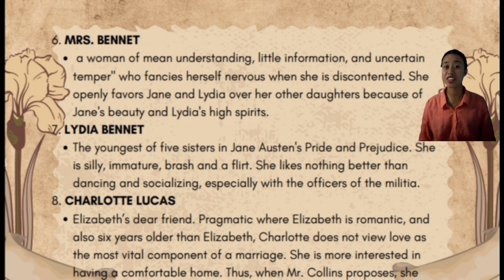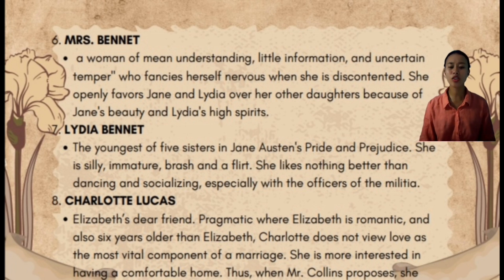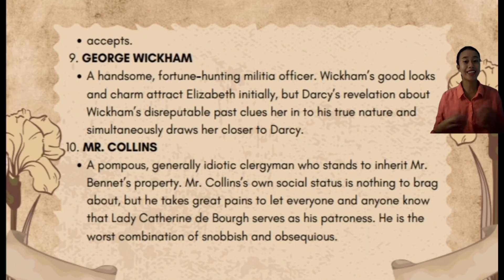The next character is Charlotte Lucas. She is Elizabeth's dear friend. She is pragmatic where Elizabeth is romantic, and also six years older than Elizabeth. Charlotte does not view love as the most vital component of a marriage and is more interested in having a comfortable life.